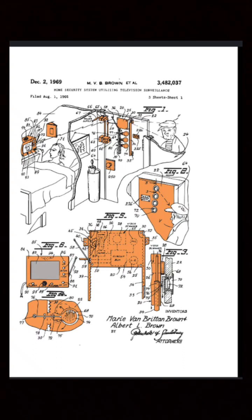The monitor could be placed in any part of the house to allow you to see who was at the door. There was also a voice component to enable Brown to speak to the person outside. If the person was perceived to be an intruder, the police would be notified with the push of a button.